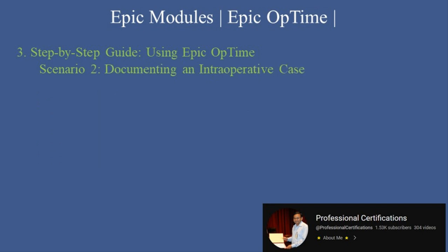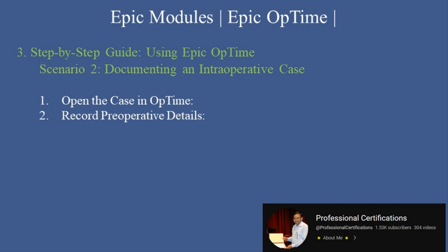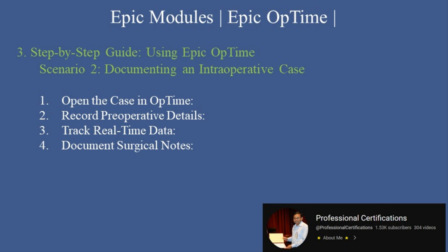Scenario 2: Documenting an Intraoperative Case. Step 1: Open the case in Optomy — access the patient's surgical case from the OR dashboard. Step 2: Record preoperative details — document pre-surgery assessments, consent forms, and anesthesia plans. Step 3: Track real-time data — use the intraoperative interface to log vital signs, medications, and procedural milestones. Step 4: Document surgical notes — record the surgeon's observations and key steps of the procedure. Step 5: Finalize the case — complete the documentation and ensure all data is saved for postoperative review.